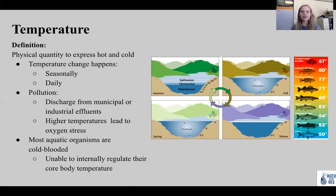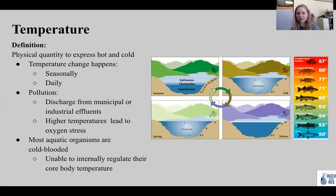Thermal pollution almost always occurs as a result of discharge from municipal or industrial facilities. In running waters, particularly in small urban streams, elevated temperatures from roads or parking lots from runoff can be a serious problem for cool- or cold-blooded fish populations. Higher temperatures decrease the maximum amount of oxygen that can be dissolved in water, leading to oxygen stress if the water is receiving high loads of organic matter. Most aquatic organisms are cold-blooded, unable to internally regulate their core body temperatures. Fish, insects and other aquatic species all have preferred temperature ranges. A cisco prefers cooler water at 50 degrees Fahrenheit, whereas a largemouth bass prefers water around 80 degrees Fahrenheit.